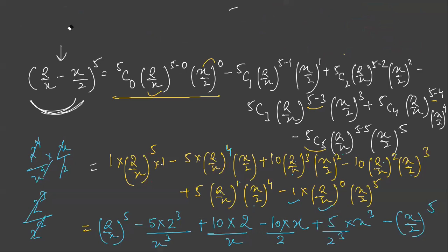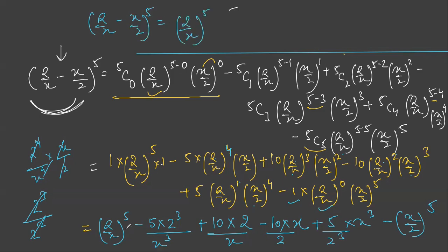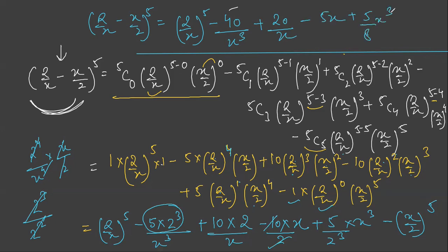So the final answer for (2/x − x/2)^5 is: 32/x^5 − 40/x^3 + 20/x − 5x + 5x^3/8 − x^5/32. Every term is an unlike term, so we cannot combine them further. This is the final expanded value of this binomial raised to power 5. Thank you everyone.